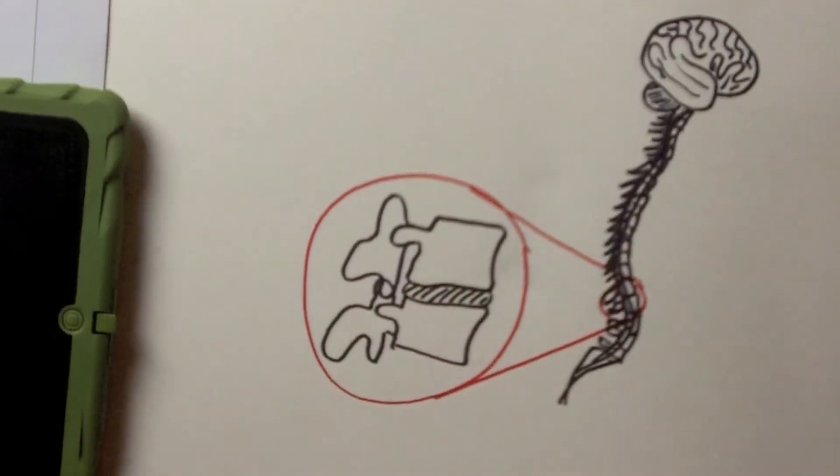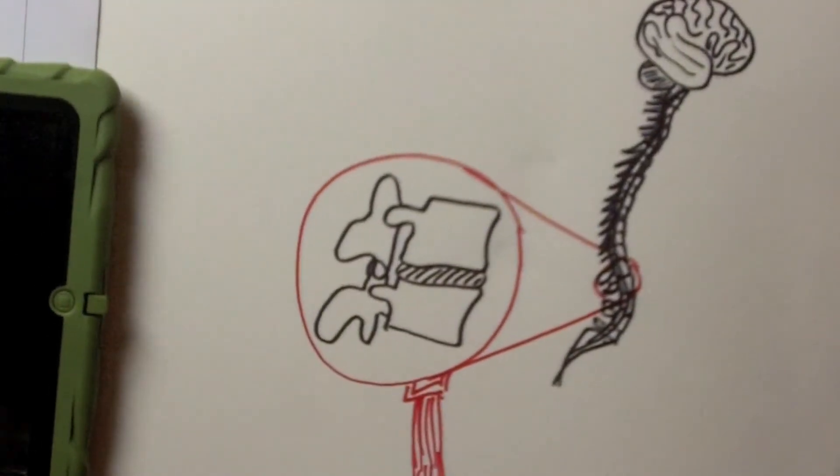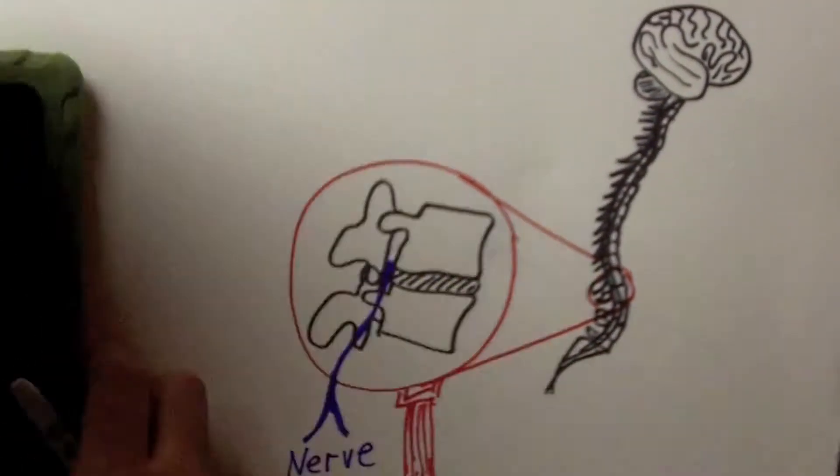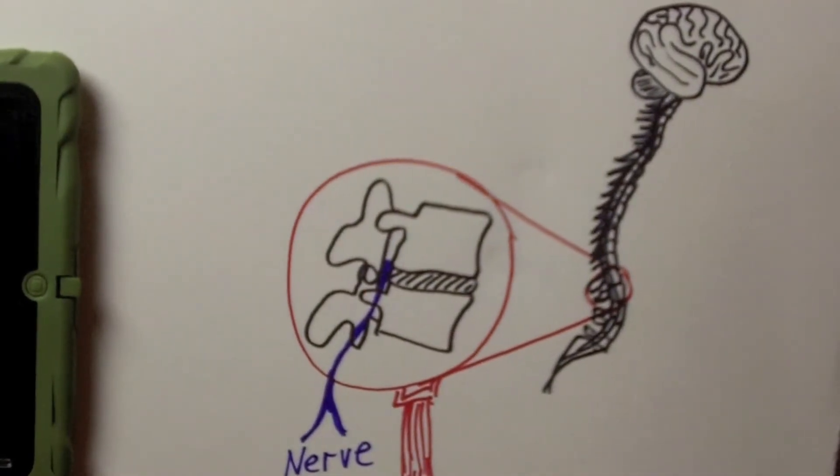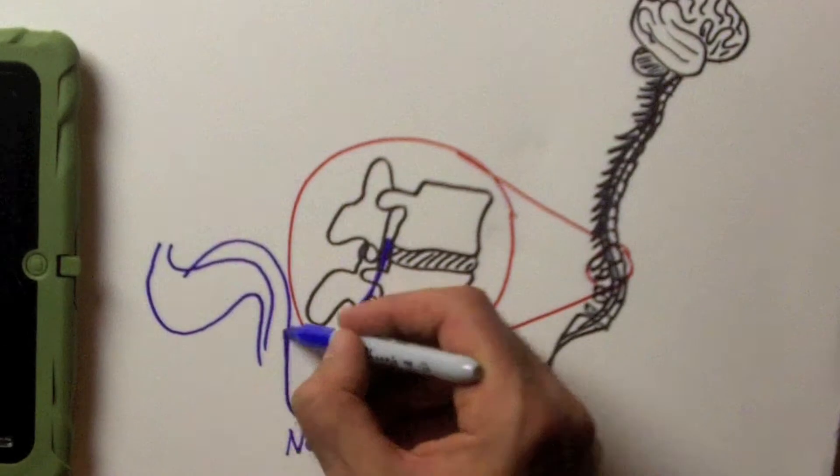These two bones and the spacer between them create a hole, which is called a foramen. Through this foramen the spinal nerve exits and carries information from the brain to muscles, organs, cells, and back to the brain.